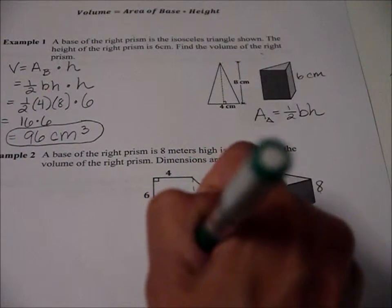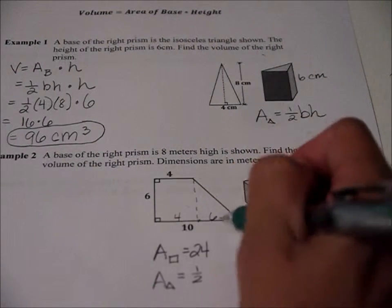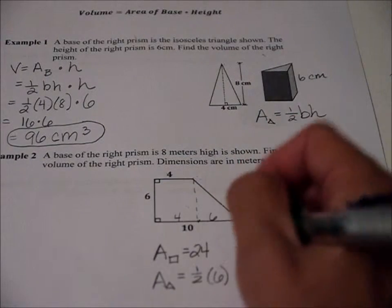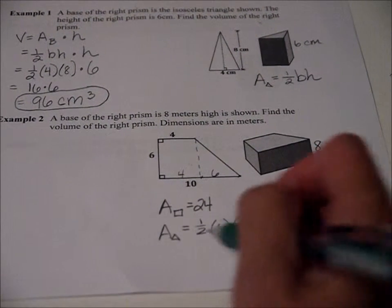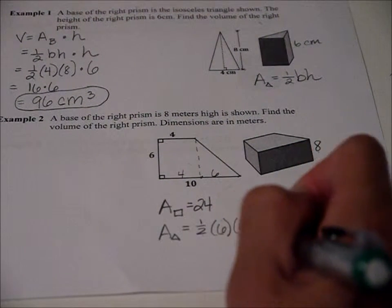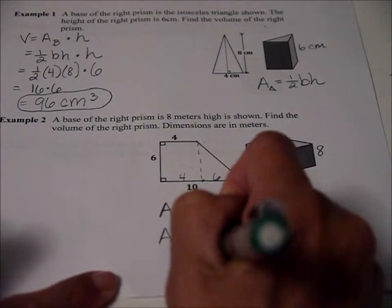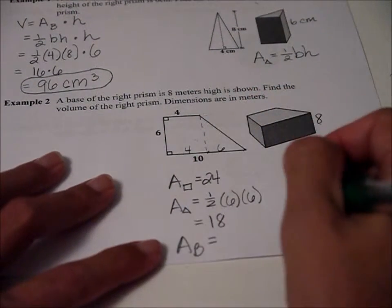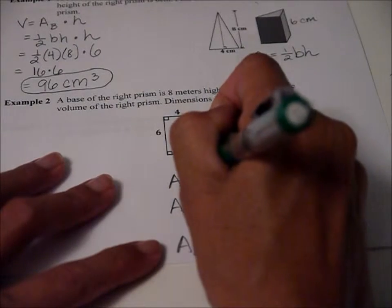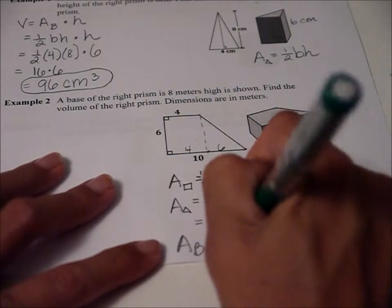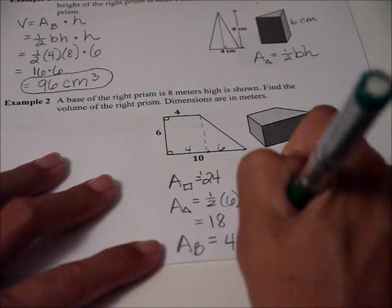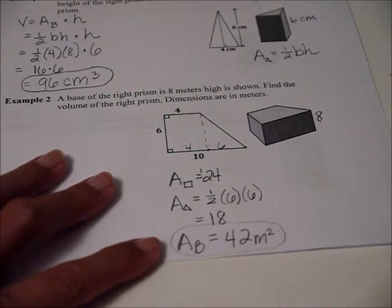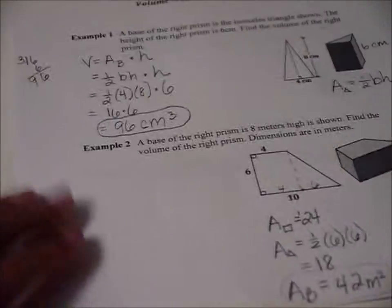And the area of the triangle is one half base, which is six times height. From here to here is our height. And that's six. So one half of six times six, or how about one half of six is three? Three times six is 18. So the area of the base now is 24 plus 18. So it's 42 meters squared, right? The area because we just dealt with a flat area.